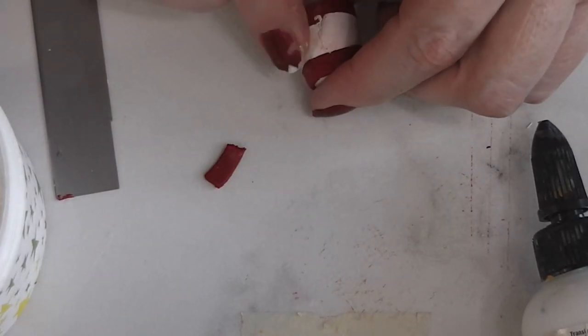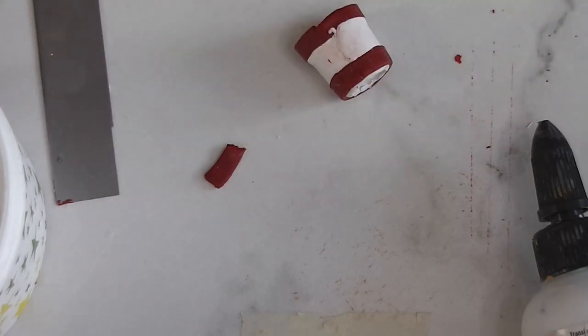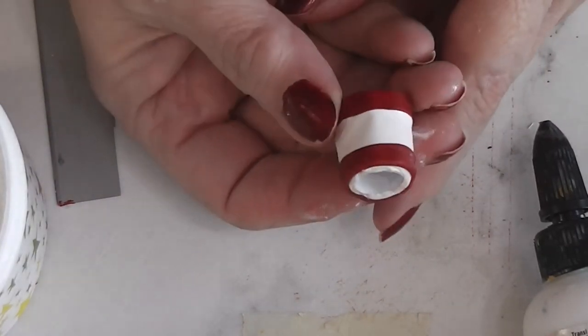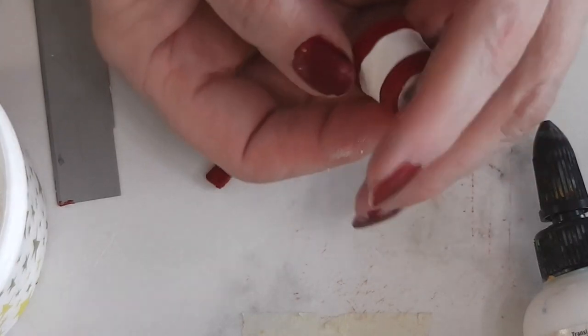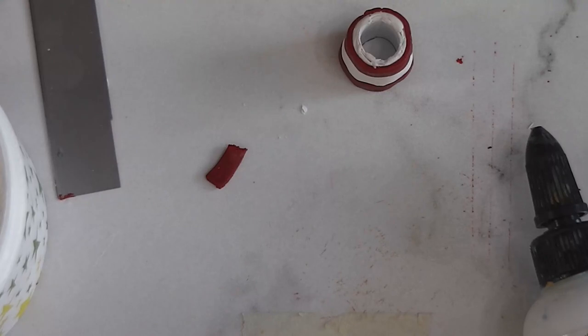Alright. I am going to off camera smooth out this seam a little bit more. And then I am going to bake this again at the recommended temperature for my clays for a full ten minutes. And once it is baked and cooled, I will come back and we will start working on the lid.